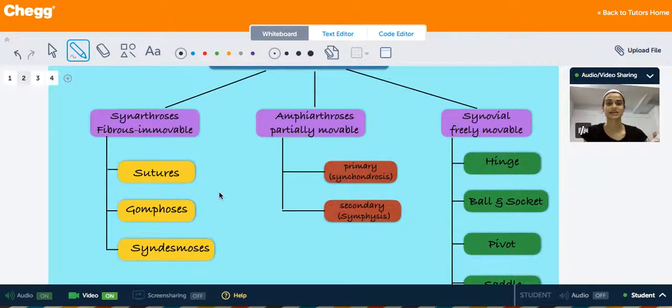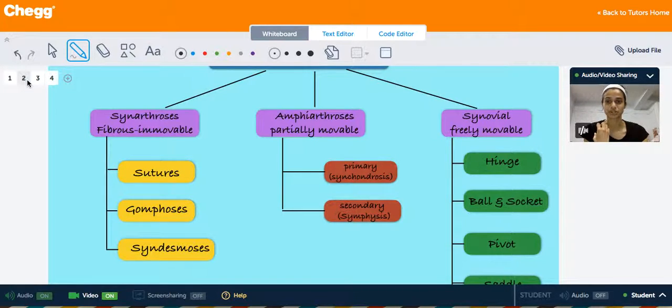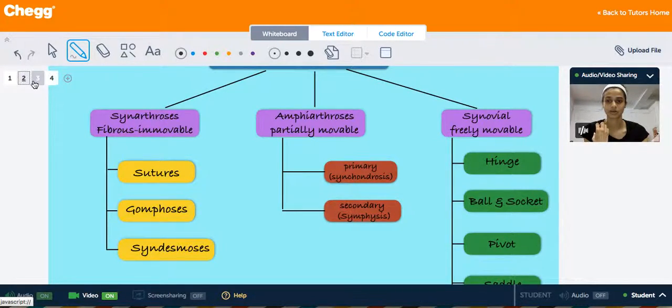Sutures, for example, are the types of fibrous joints that connect the flat plate-like bones of your skull. Gomphoses are another type of fibrous joint that basically helps anchor your teeth into the bony sockets of your jaw. So I have a picture of that right here.